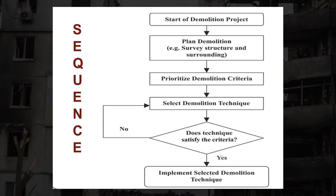The demolition sequence diagram shows the following steps: start of demolition project; plan and survey the structure and surroundings; prioritize demolition criteria; select the demolition technique best suited to the project; determine whether the technique satisfies the safety criteria; and finally, implement the selected demolition technique.